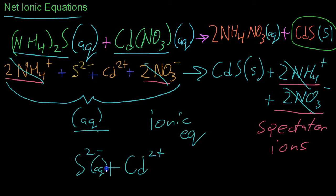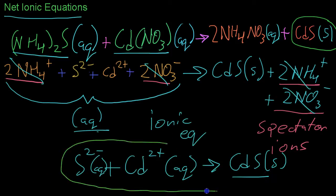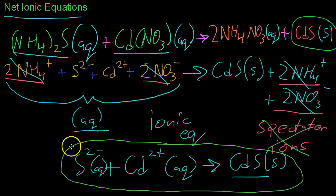And what you're left with is the simple reaction of sulfur and cadmium, both in an aqueous solution, precipitating to form solid cadmium sulfide. And this equation down here, the simplified version that does not have the spectator ions in it, is what is known as the net ionic equation. And this not only describes the reaction between ammonium sulfide and cadmium nitrate, but really any aqueous solutions that involve sulfur ions and cadmium ions to form a cadmium precipitate can be described by this net ionic equation.